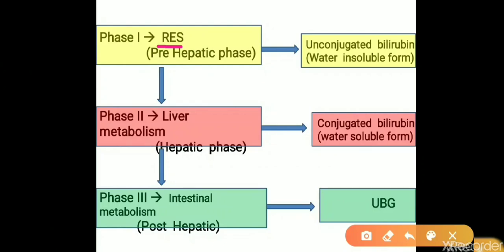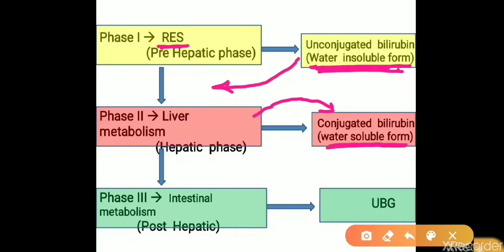In Phase 1, the reticuloendothelial system produces unconjugated bilirubin, which is water-insoluble. To excrete this water-insoluble substance through urine, it must be converted to water-soluble form. So this unconjugated bilirubin is transported to the liver where Phase 2 metabolism — conjugation — takes place. Inside the liver cell, unconjugated bilirubin is converted into conjugated bilirubin, which is water-soluble.